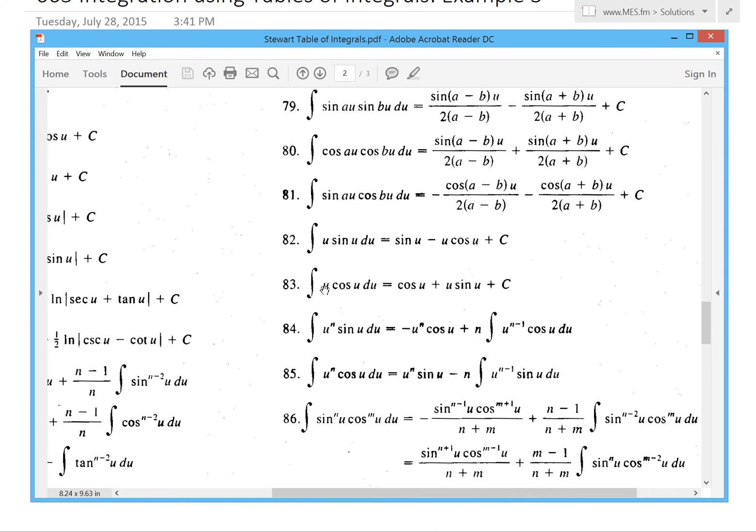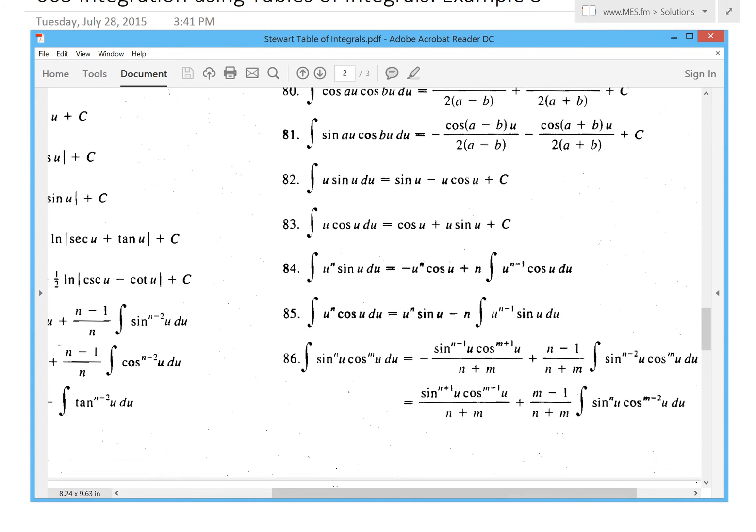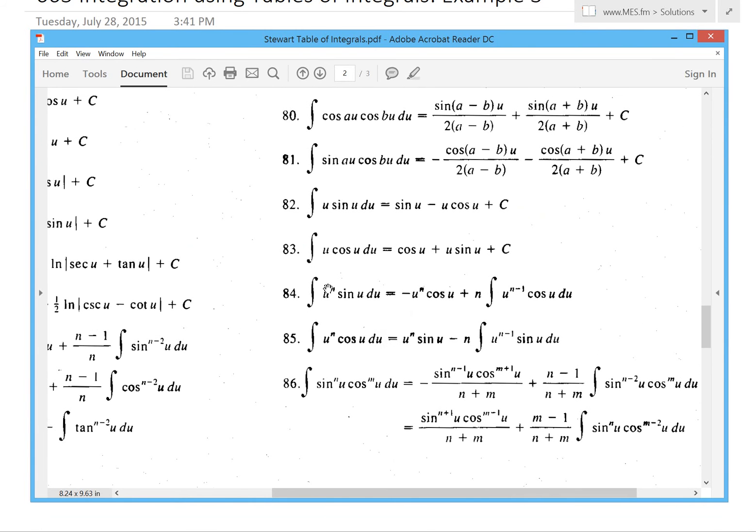But we do see right here u². This is the highest power for the formula we have in this table of integrals. But if you look at formulas 84 and 85, these are called reduction formulas where you have u^n and then you eventually get integral of u^(n-1).